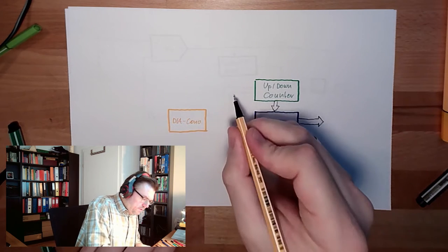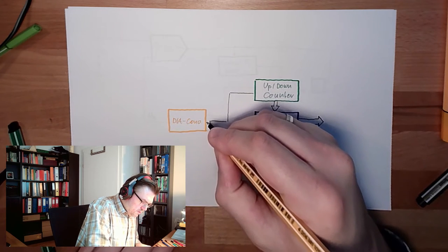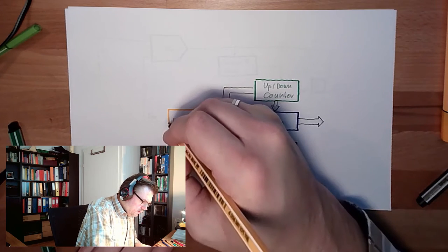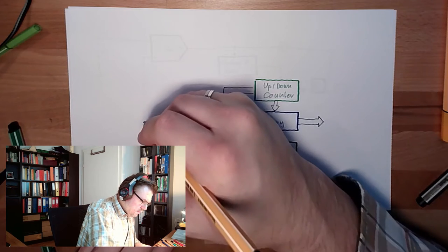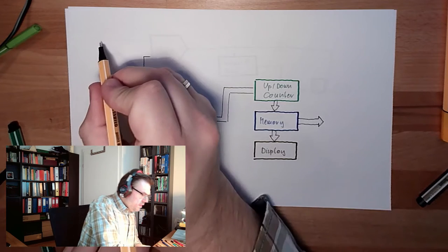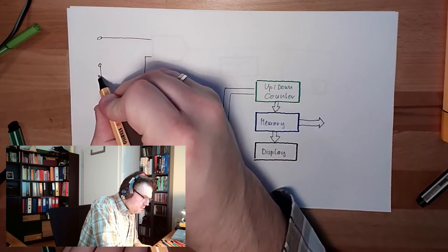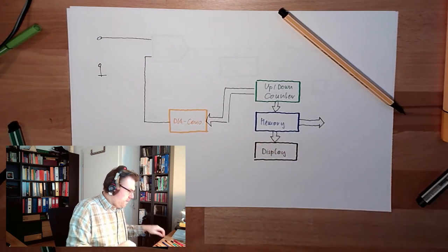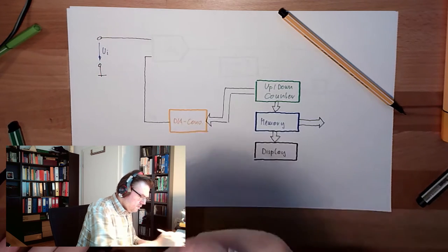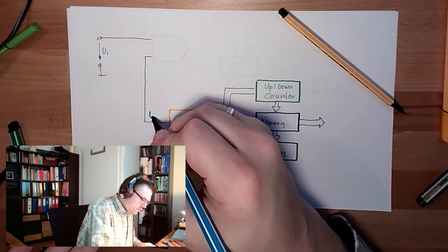The value from the up-down counter is then transferred to this digital-analog converter. The result is again a voltage. Here we do have again the input voltage, here we have the analog voltage or the input voltage. Here we have to compare, here we have the voltage to compare.